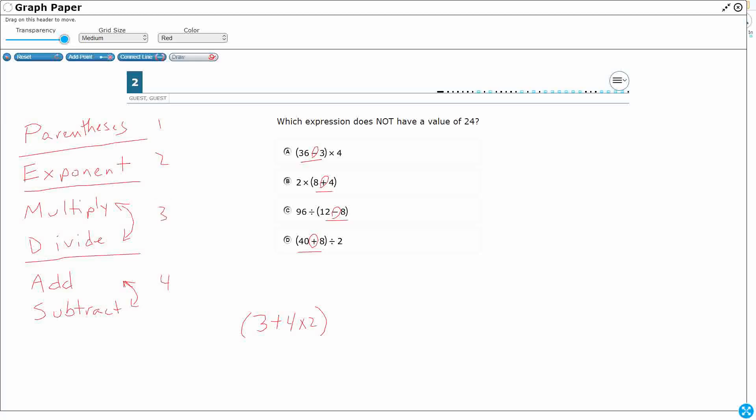Because multiply and divide are equal, add and subtract are equal. They're inverse operations. All right. So let's simplify here. So I need to go ahead and take care of all of my parentheses first.